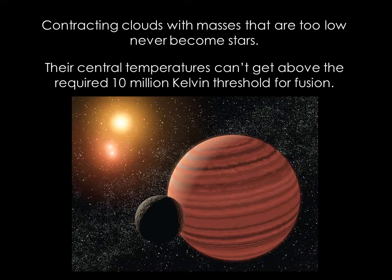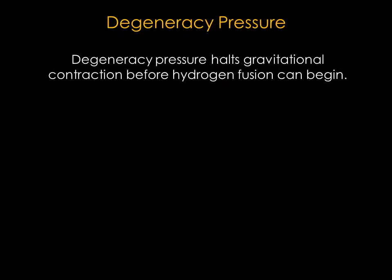Contracting clouds with masses that are too low never become stars because their central temperatures can't get above the required 10 million Kelvin threshold for fusion. This is because of a type of pressure called degeneracy pressure. Degeneracy pressure halts gravitational contraction before hydrogen fusion can begin.